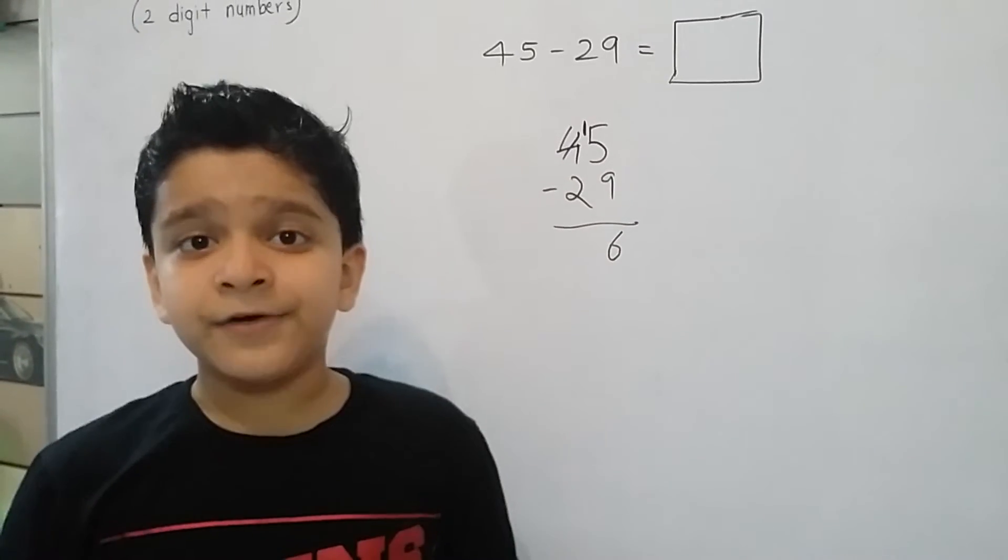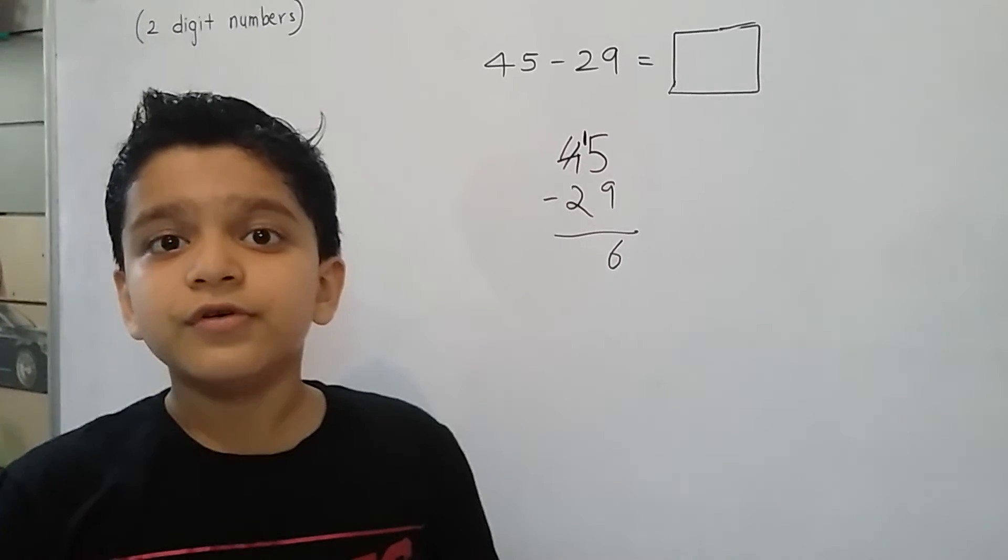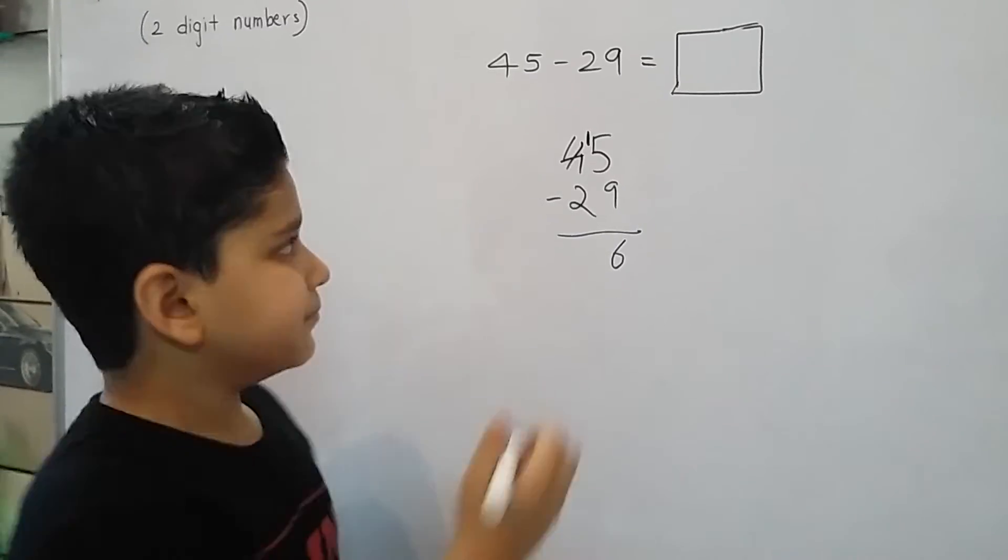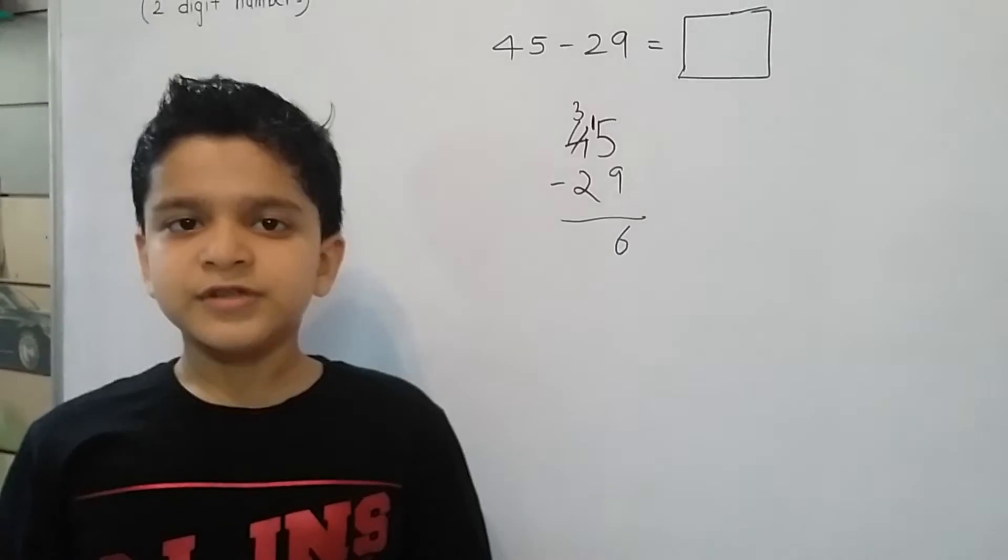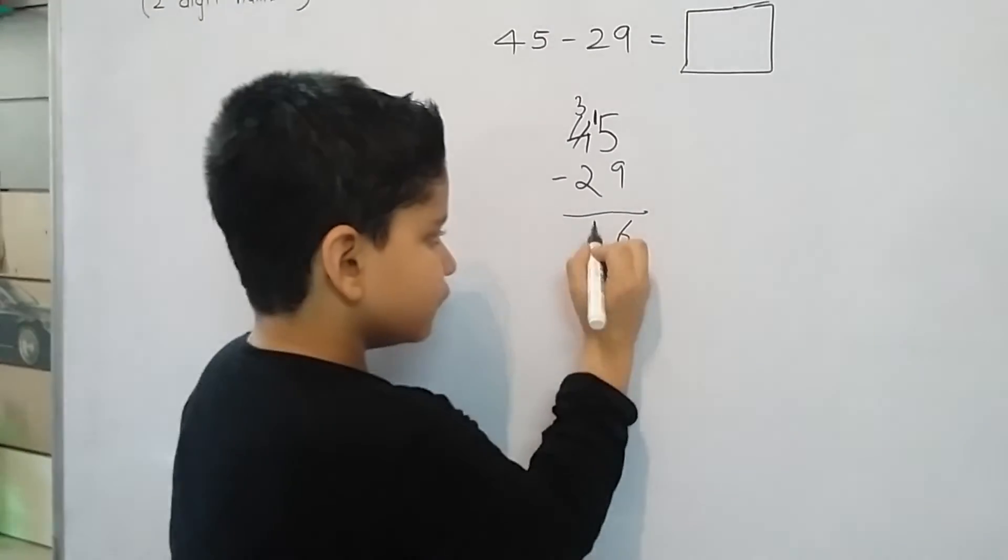As the 4 has given a 1 to 5, so it will become 3. 3 minus 2 is equal to 1.